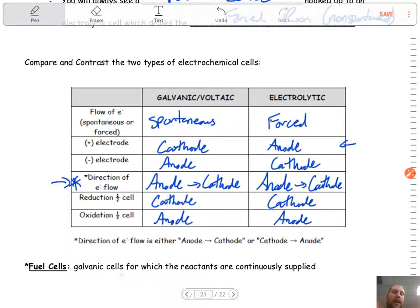All right, last thing, guys, fuel cells, galvanic cells for which reactants are continuously supplied. Just remember that term in terms of a fuel cell.